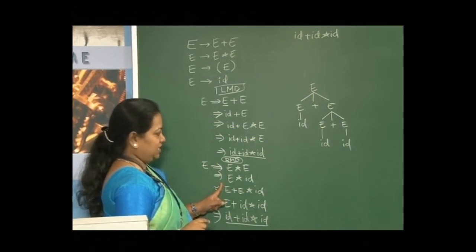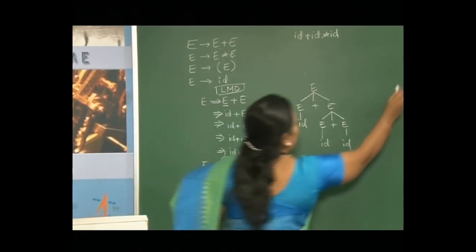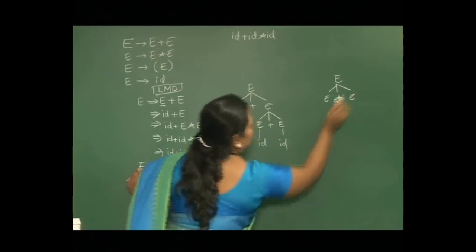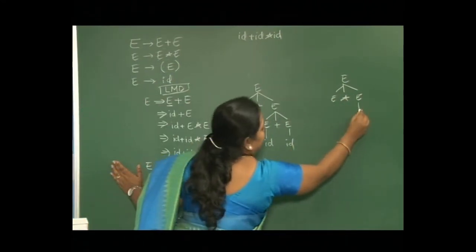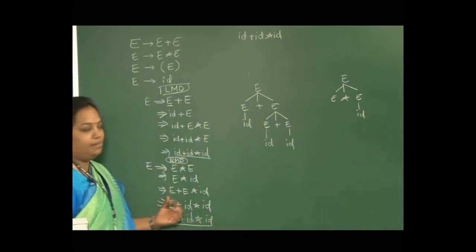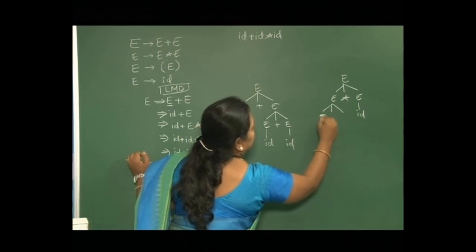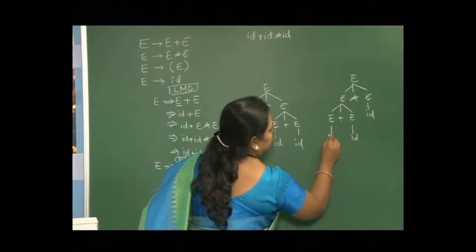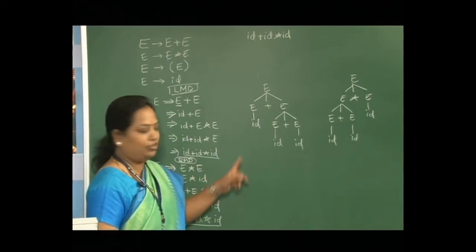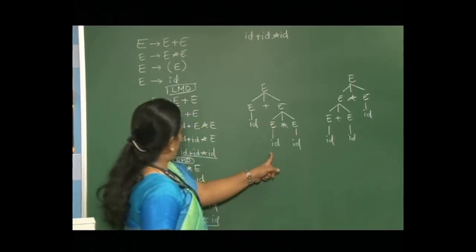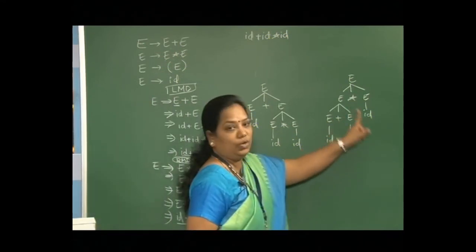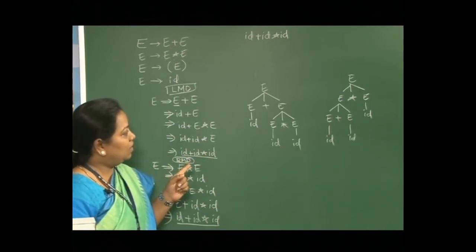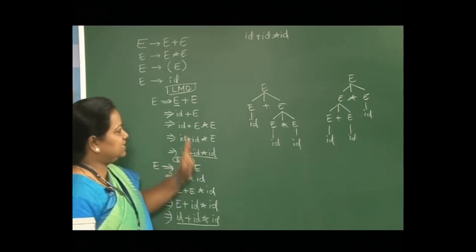We have obtained two parse trees — one from the leftmost derivation: E tends to E plus E, this E replaced as ID, then E replaced as E into E, and both E's replaced as ID. The other parse tree from the rightmost derivation: E derives E into E, then E is replaced as E plus E with E replaced as ID, next E replaced as ID, and next E replaced as ID. Reading left to right both give ID plus ID into ID. Are both parse trees the same? No, which means the grammar is ambiguous.